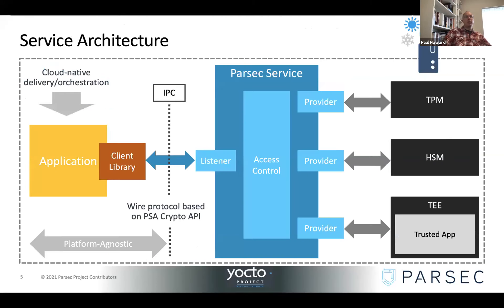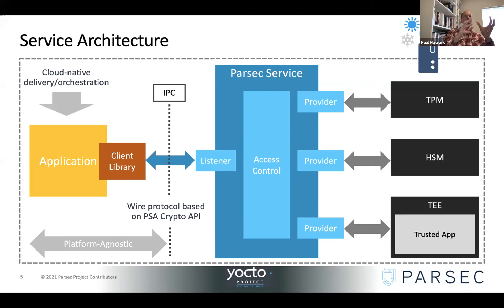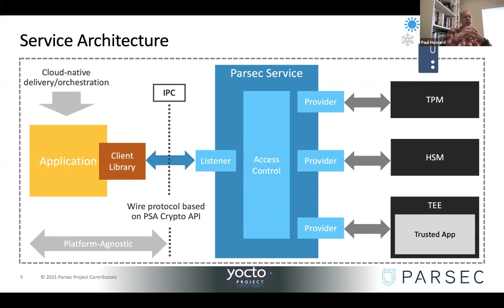A lightning tour of Parsec architecture. Parsec is essentially a host-local architecture — everything runs on a node of some kind, imaged with the Yocto Linux distro and including whatever applications and services the deployment needs. There's no network traffic, at least as far as Parsec itself is concerned. Parsec runs as a software service — it's a daemon that runs in user space — and its job is to represent whatever hardware security facilities are available in the host.